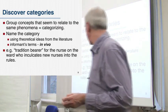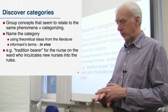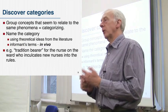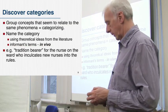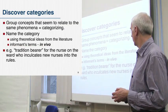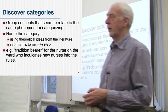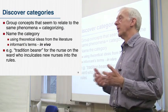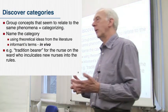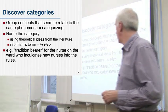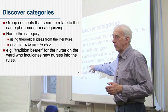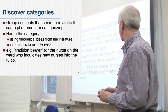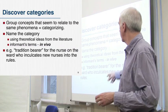This example comes from Strauss and Corbin. Glaser and Strauss's early work that started grounded theory was in hospital settings — they were looking at nursing in hospitals. Here's an example: the so-called 'tradition bearer,' the nurse on the ward who inculcates new nurses into the rules of how you behave and act on the ward. It turns out this is true of a lot of organizations — there's always somebody whose job it is to inculcate new people with how we do things in this department or on this ward. So 'tradition bearer' is the name for a code, and things that person is doing are coded as tradition bearer activities. This is an in vivo code.